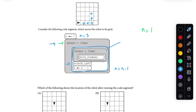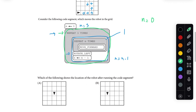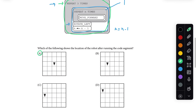Now we're on our final iteration of the outer loop. We repeat moving forward n times — n is equal to one, so we only move forward once, ending up here. Then we rotate left, so we're now facing down. We set n equal to n minus one, so n is now zero. We've done all three outer loop iterations, so there's no more logic to run. This is the final location of the robot, and the correct answer is A.